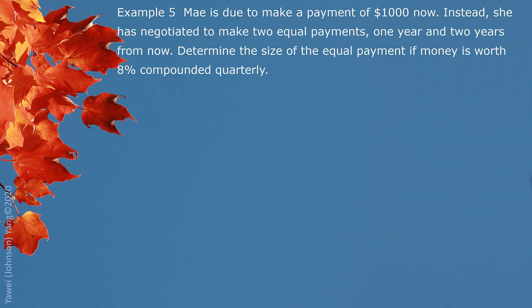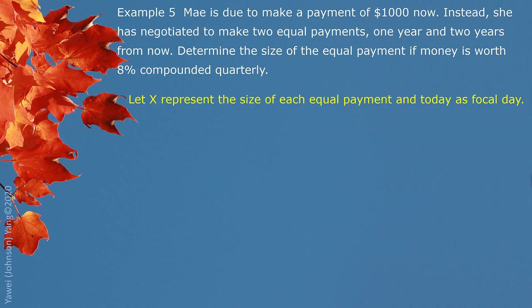Example 5: May is due to make a payment of $1,000 now. Instead, she has negotiated to make two equal payments one year and two years from now. Determine the size of the equal payment if money is worth 8% compounded quarterly. The two equivalent payments should equal $1,000. We let X represent the size of each equal payment and use today as the focal day, so the two X values are switched to equivalent present values.